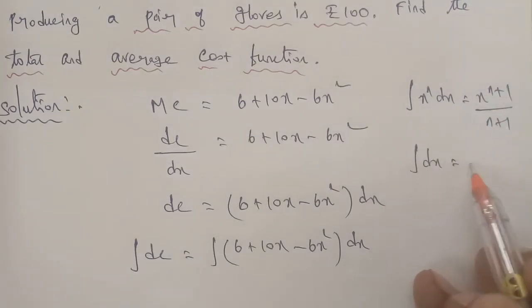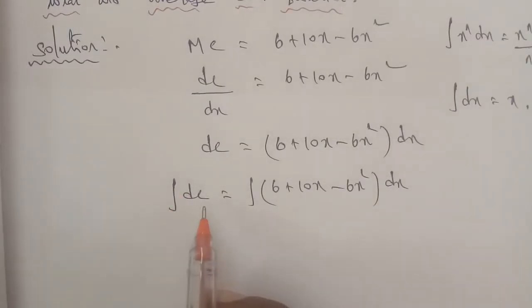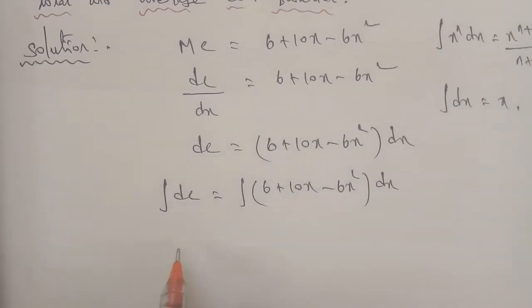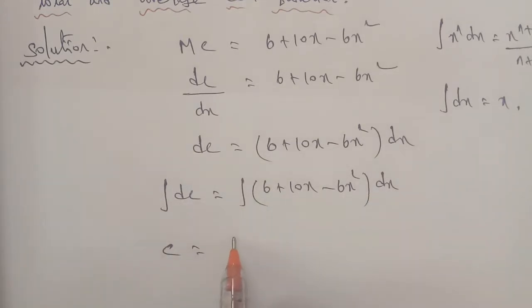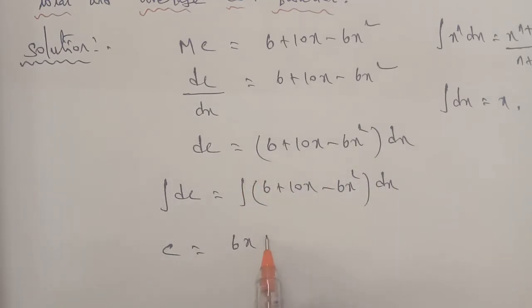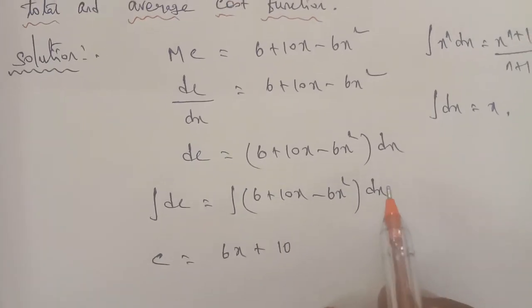Now applying the integration formula. First, integration of dC gives C. Integration of dx gives x. So integration of dC on the left side gives C. Integration of 6 dx — since 6 is a constant, we keep it outside — so it becomes 6 times integration of dx.